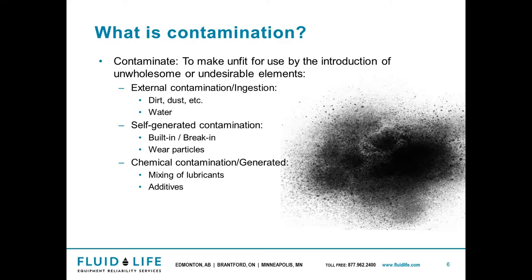So what exactly is contamination? It's basically anything that makes a system unfit for use by introduction of unwholesome or undesirable elements. The three main ways you're going to get that are external, self-generation, or chemical. In an overview, cleanliness and contamination control are going to be your most important aspects of proper lubrication for long equipment life — provided we have the right lubrication in the right place with the right viscosity and the right additive package. If you're going to take anything away from today's presentation, that will be it. Maximizing oil and equipment life by keeping your oil clean, cool, and dry — and when I say dry, I mean no moisture in your oil, so all water removed as much as possible. Most failures are going to be attributed to some form of contamination leading to corrosion and surface deterioration.